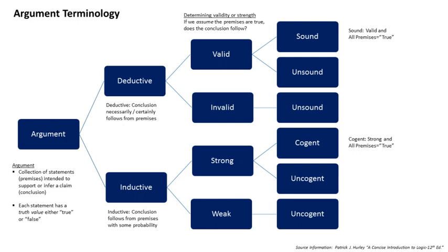In determining validity, the structure of the argument is essential to the determination, not the actual truth values. For example, consider the argument that because bats can fly (premise = true) and all flying creatures are birds (premise = false), therefore bats are birds (conclusion = false). If we assume the premises are true, the conclusion follows necessarily, and thus it is a valid argument.